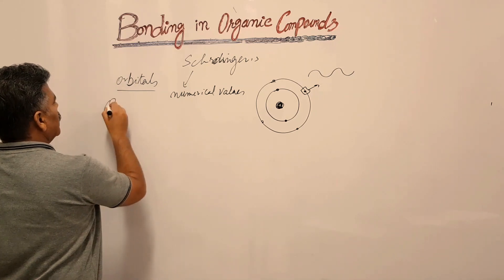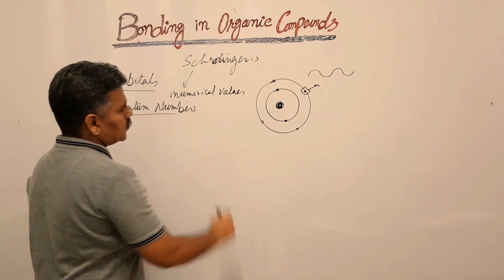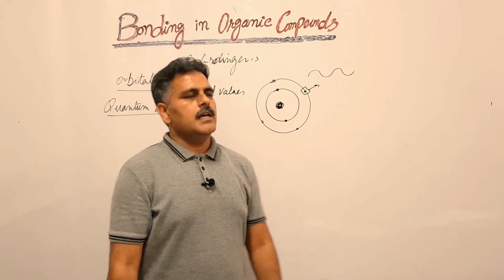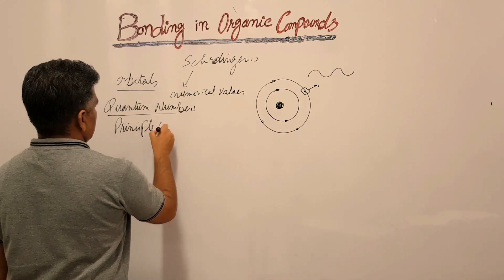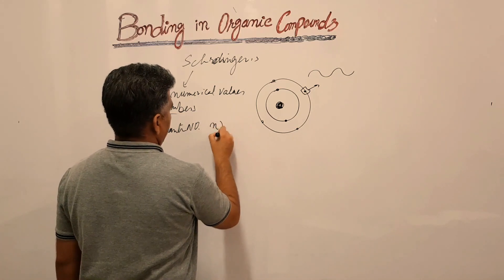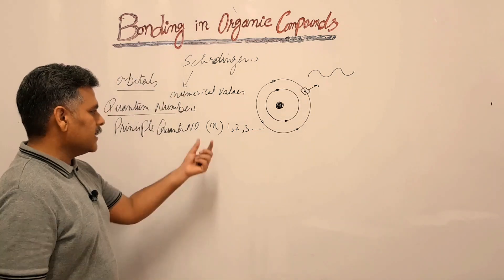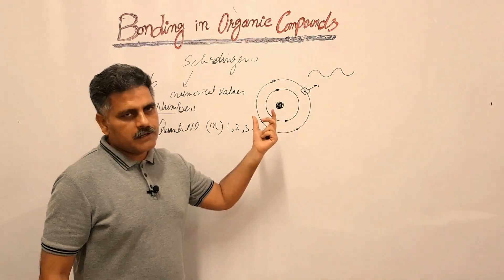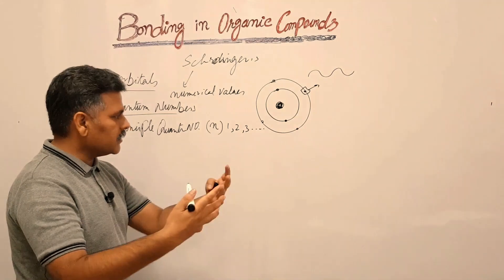The numerical values describing wave-like properties of electrons are called quantum numbers. These quantum numbers describe the wave-like properties of electrons. The first one is the principal quantum number, denoted by n, with values 1, 2, 3 and so on. It describes the shell number of electrons around the nucleus where electrons revolve.